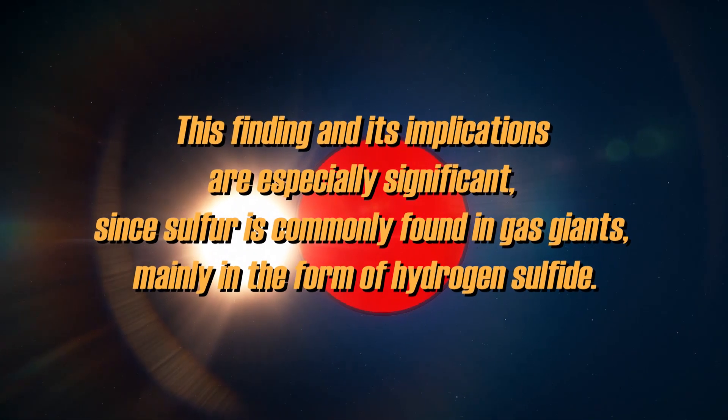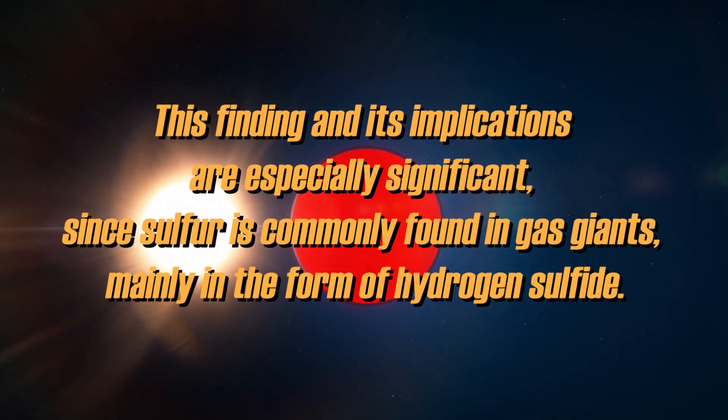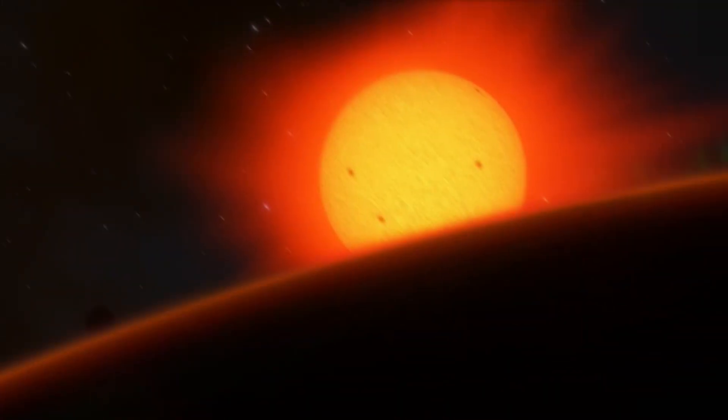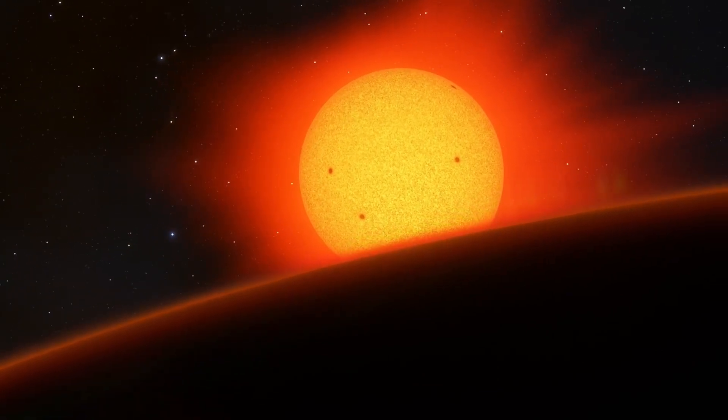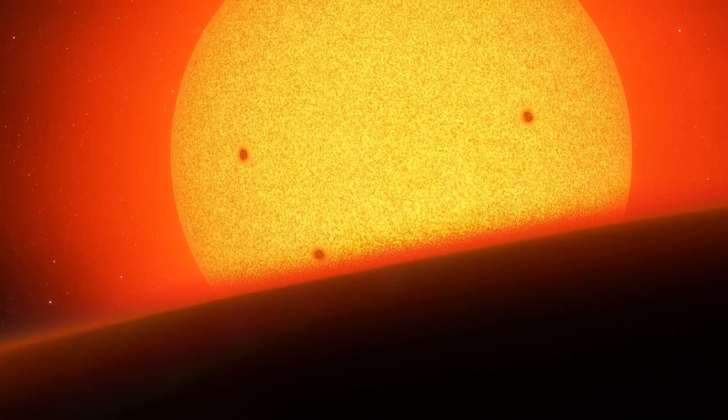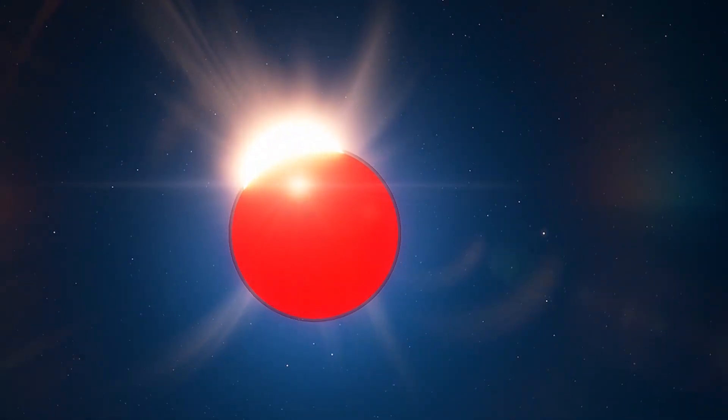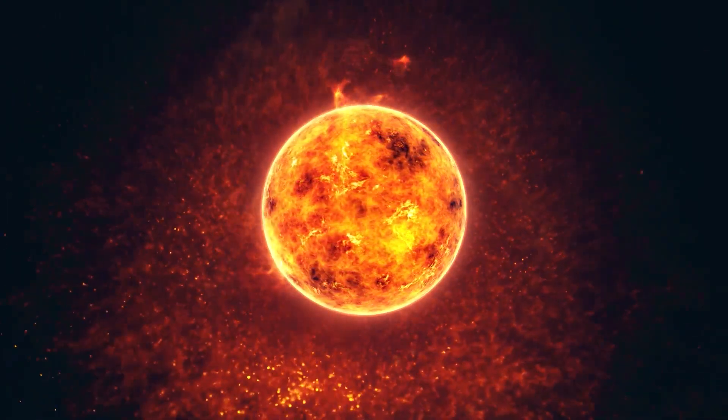This finding and its implications are especially significant since sulfur is commonly found in gas giants, mainly in the form of hydrogen sulfide. This may provide clues to the formation history of the extrasolar world in question. Consequently, the unexpectedly high content of sulfur dioxide, together with the ratios of other elements to oxygen, suggests that the atmosphere of WASP-39b contains up to 30 times more heavy elements than the sun.